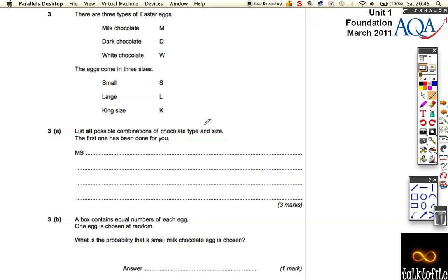Well, the best way is to work logically. If you keep the milk chocolate, do all of the other combinations. So do milk and small, milk and large, milk and king size.